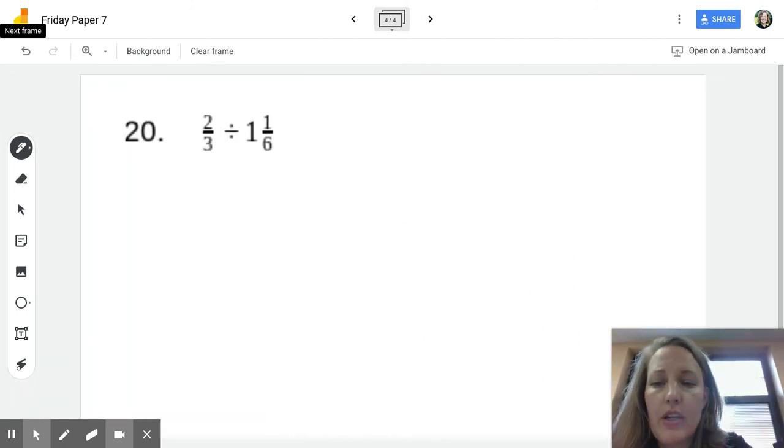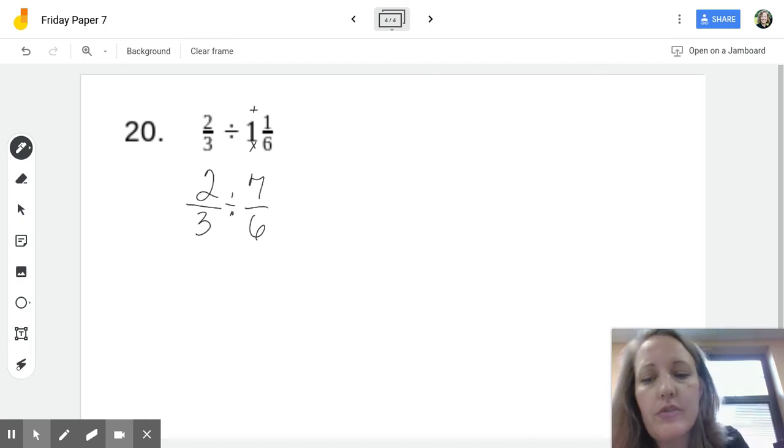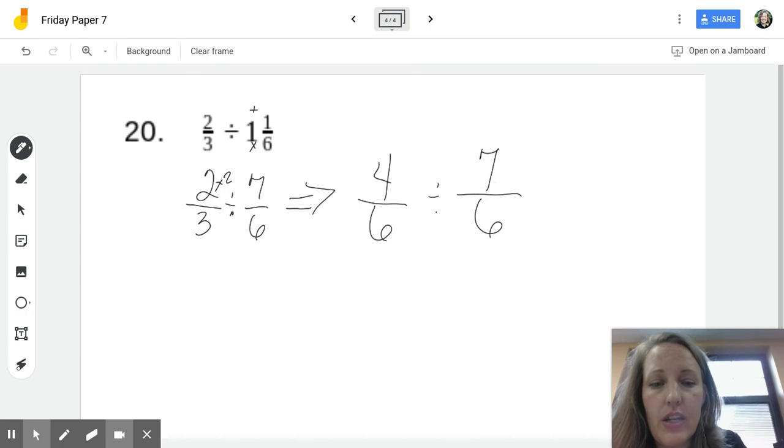Okay, let's do this last problem here. 2 thirds divided by 1 and 1 sixth. Again, there's multiple ways to do this. You can get a common denominator. I'm going to show this because you don't usually see it. 1 times 6 is 6 plus 1 is 7. I just made this. Sorry, divided by, I made it an improper fraction. 6 plus 1 is 7 sixths. Now, we are going to go back and do the keep change flip, which is the algorithm that most of you remember. But remember, we can also get a common denominator here. Okay? So 6 and 3, the common denominator is 6. 3 times 2 is 6. So 2 times 2 is 4, divided by 7 sixths. So now, this is where it gets a little confusing. We're saying 4 divided by 7 here, correct? 4 sixths divided by 7 sixths. We're trying to find out how many times 7 sixths goes into 4 sixths.